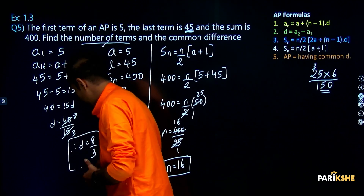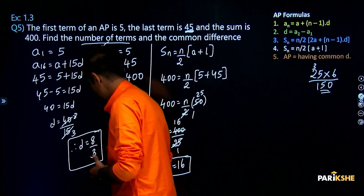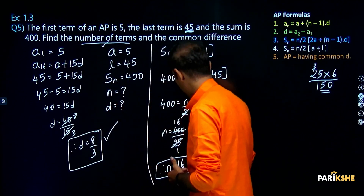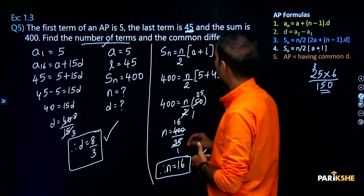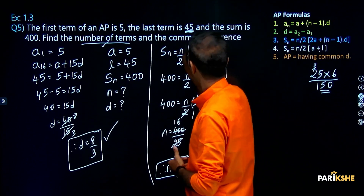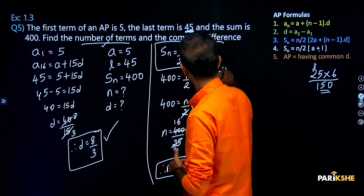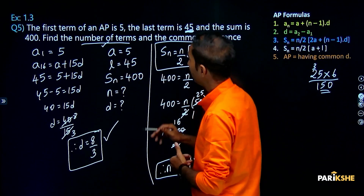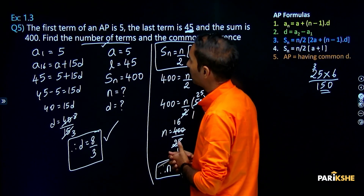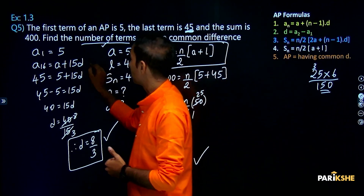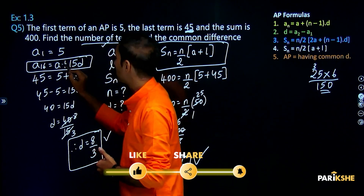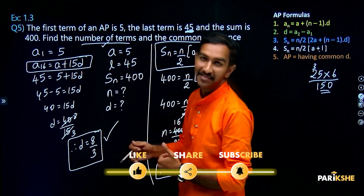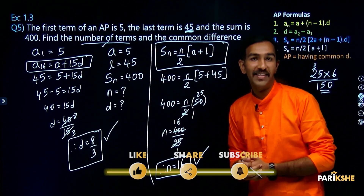So that is our answer: n is equal to 16 and d is equal to 8/3. We used the formula for the nth term (an formula) to find the common difference.